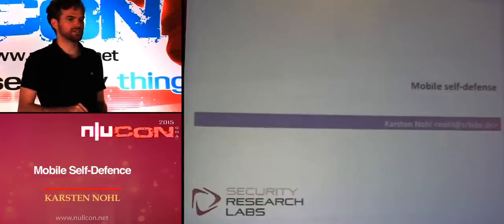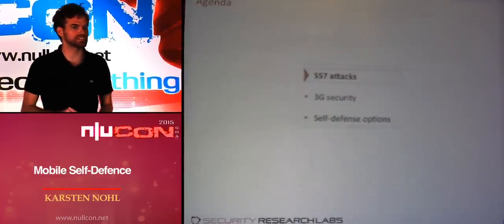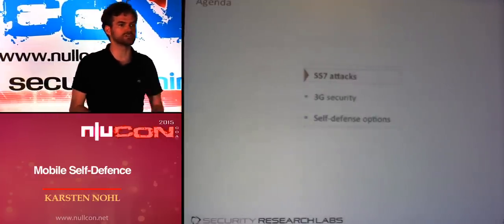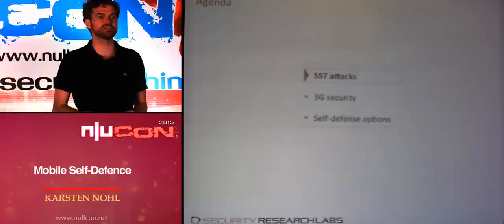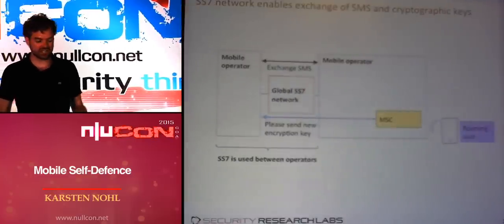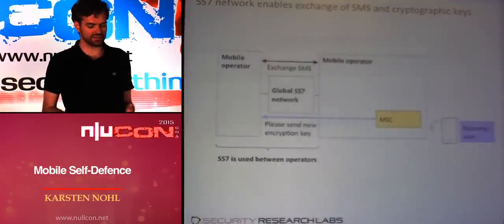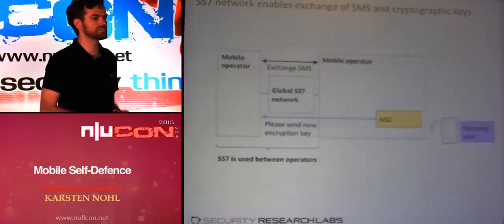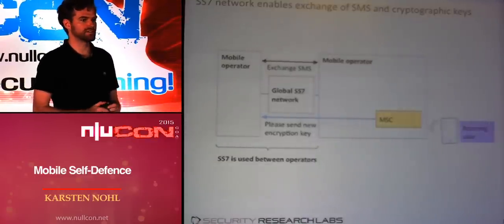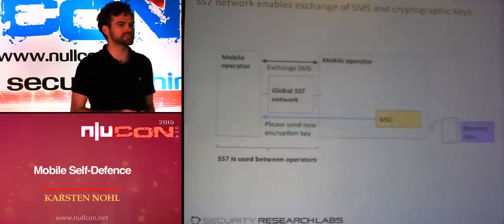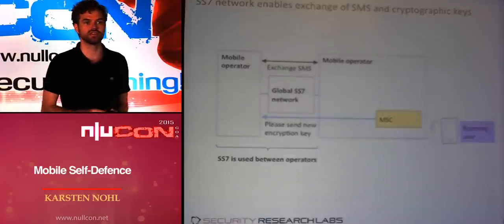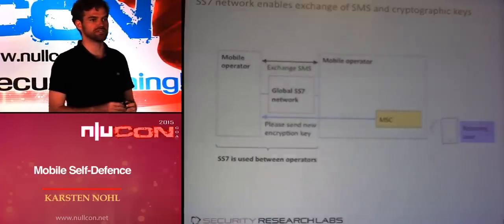A well-known interconnect network that connects different telcos in the world is the SS7 network, and that shall be one focus area of this talk. The other focus is pure 3G security — aside from these interconnect topics, what can go wrong in 3G encryption? SS7 is a network that connects pretty much all telcos in the world — some 800 — and it's needed for standard functionality. It was introduced even before mobile networks existed, but today most SS7 functions are bound to mobile networks. For instance, SS7 is the network over which SMS are sent if you send from one network to another.